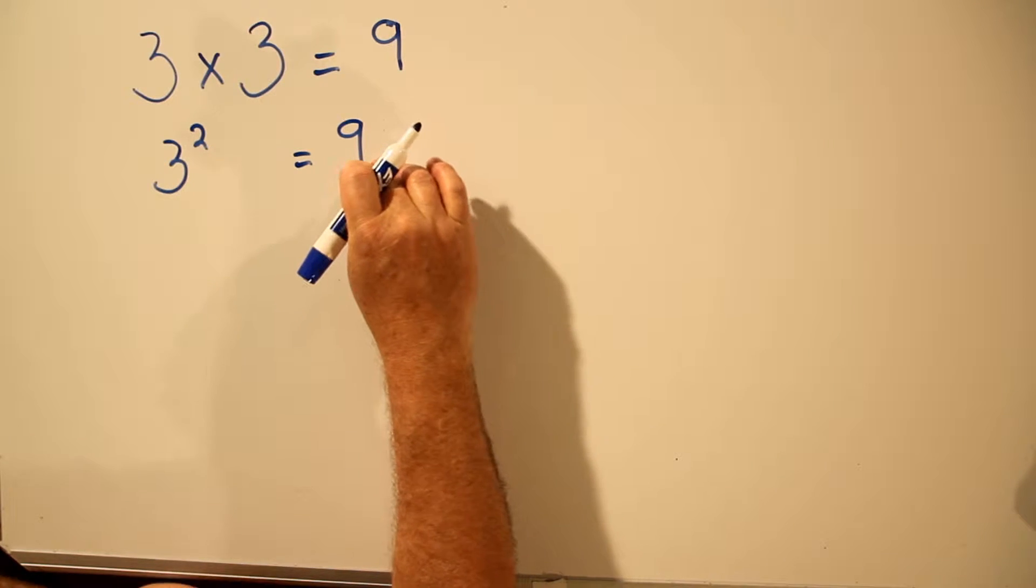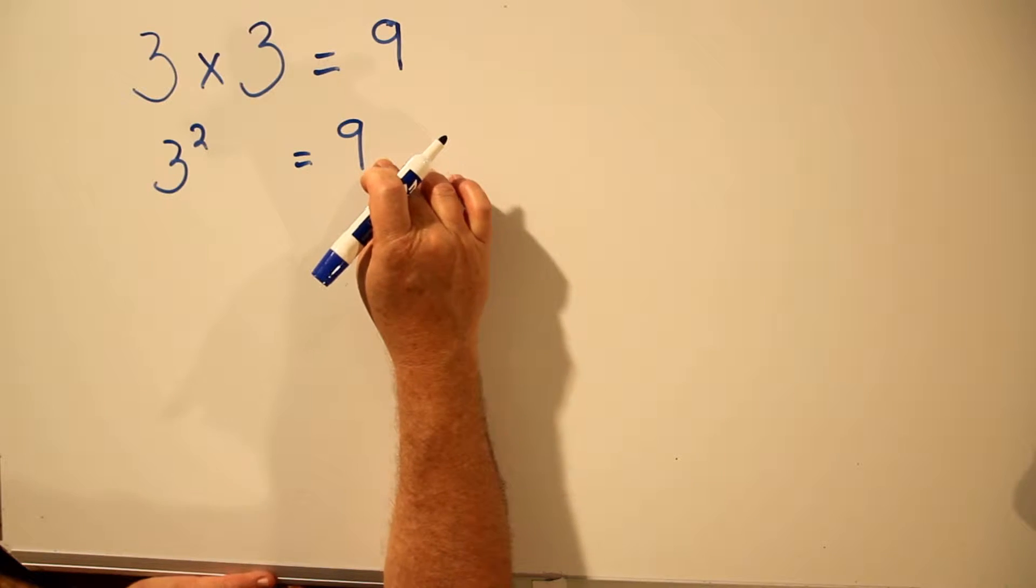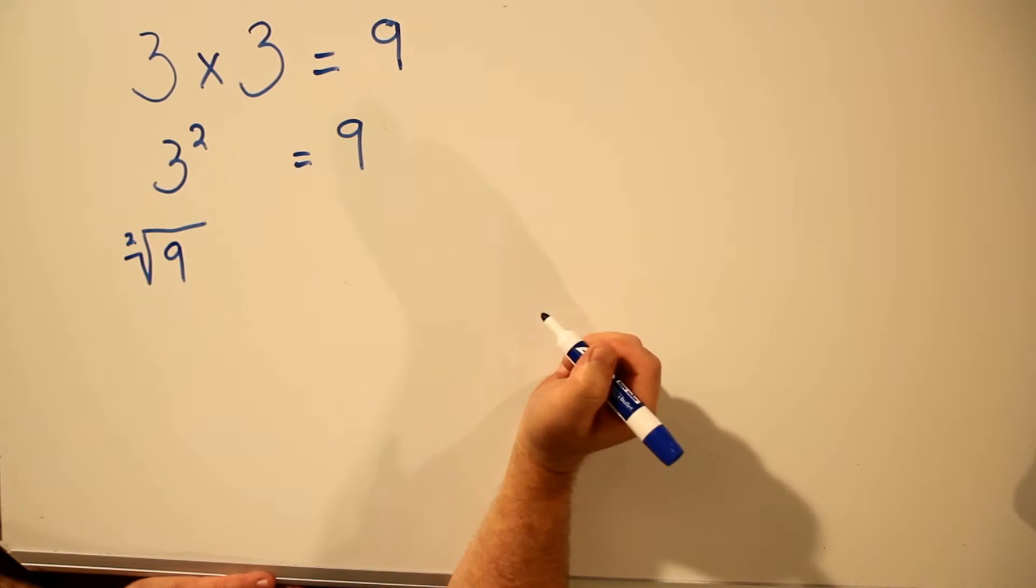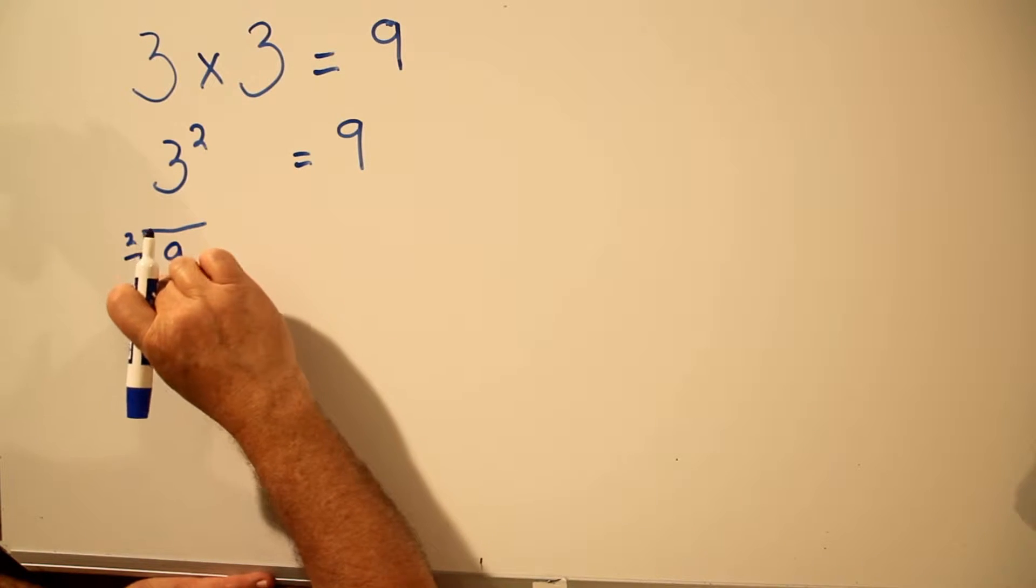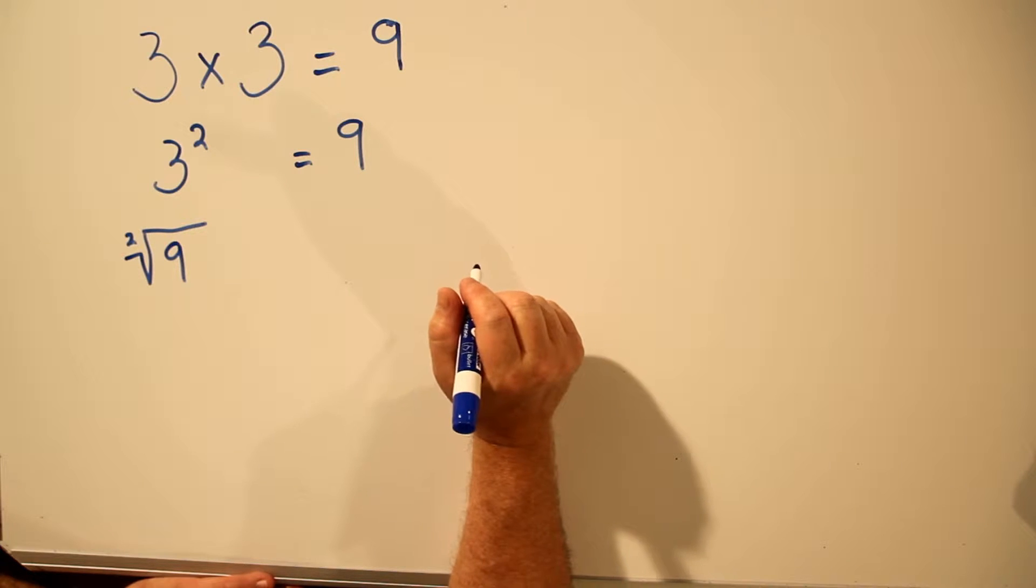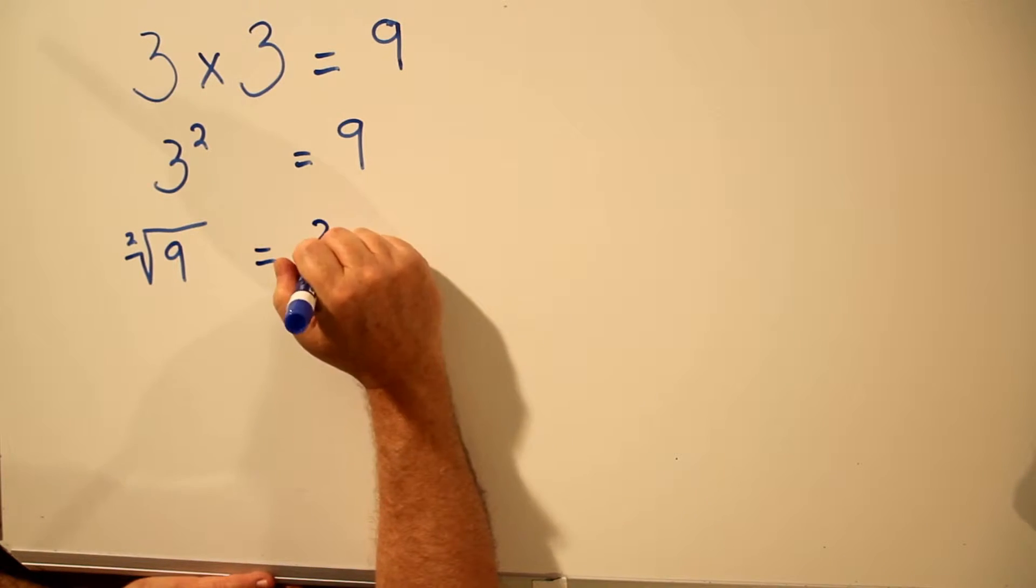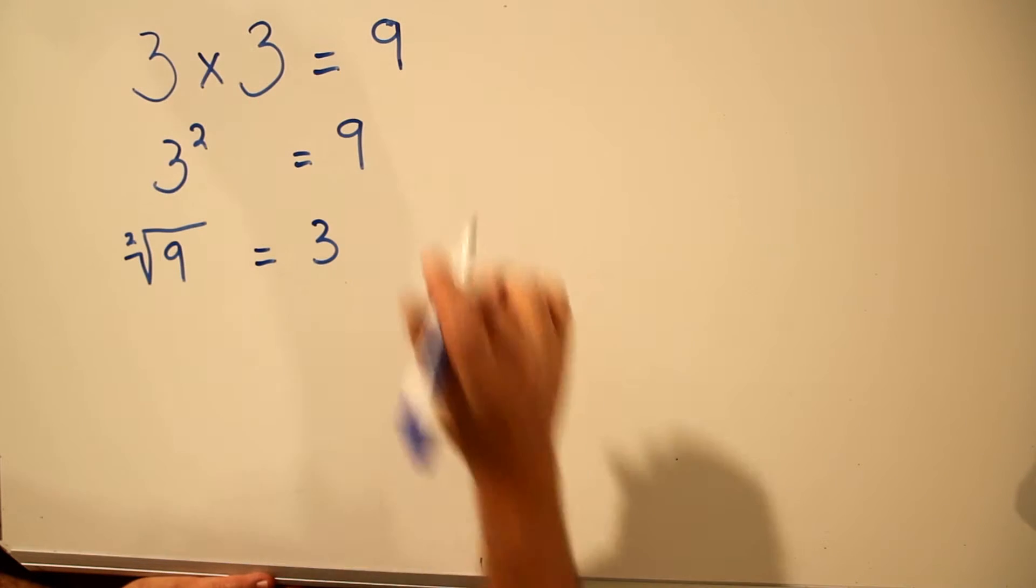If we started with 9 and we said what two numbers multiplied together give us 9, we would use this sign, put a 9 underneath it, and it's saying what is the square root of 9? What is the second root of 9? And the answer would be 3, because 3 times 3 equals 9.